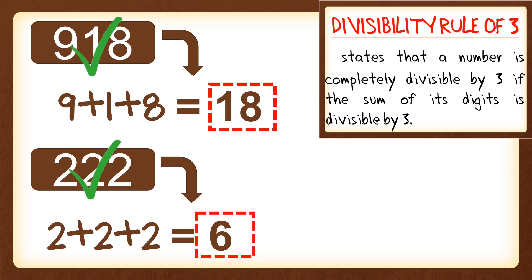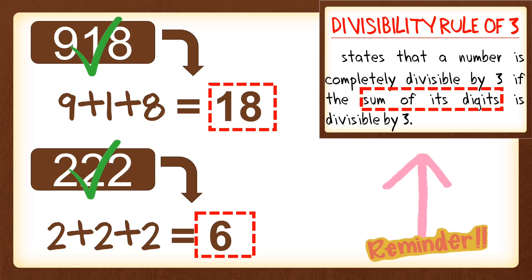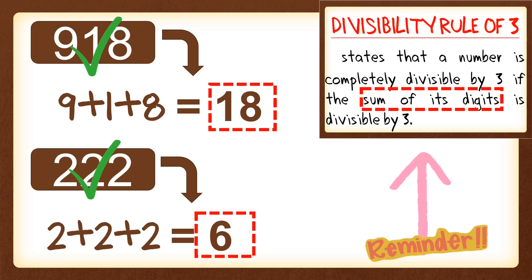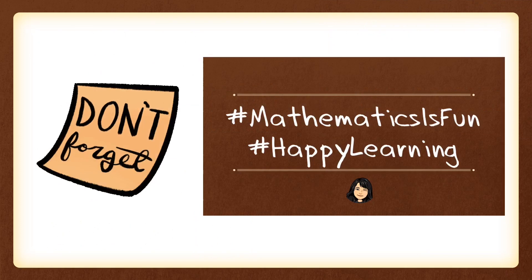Remember: to apply the divisibility rule of 3, just get the sum of the digits and determine if it is a multiple of or divisible by 3. Don't forget — happy learning, because mathematics is fun!